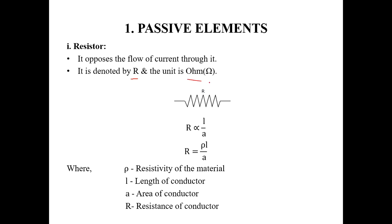Resistance is directly proportional to L divided by A. To remove this proportionality, we write R equal to rho L divided by A. Here, rho is the resistivity of the material, L is the length of the conductor, and A is the cross-sectional area of the conductor.